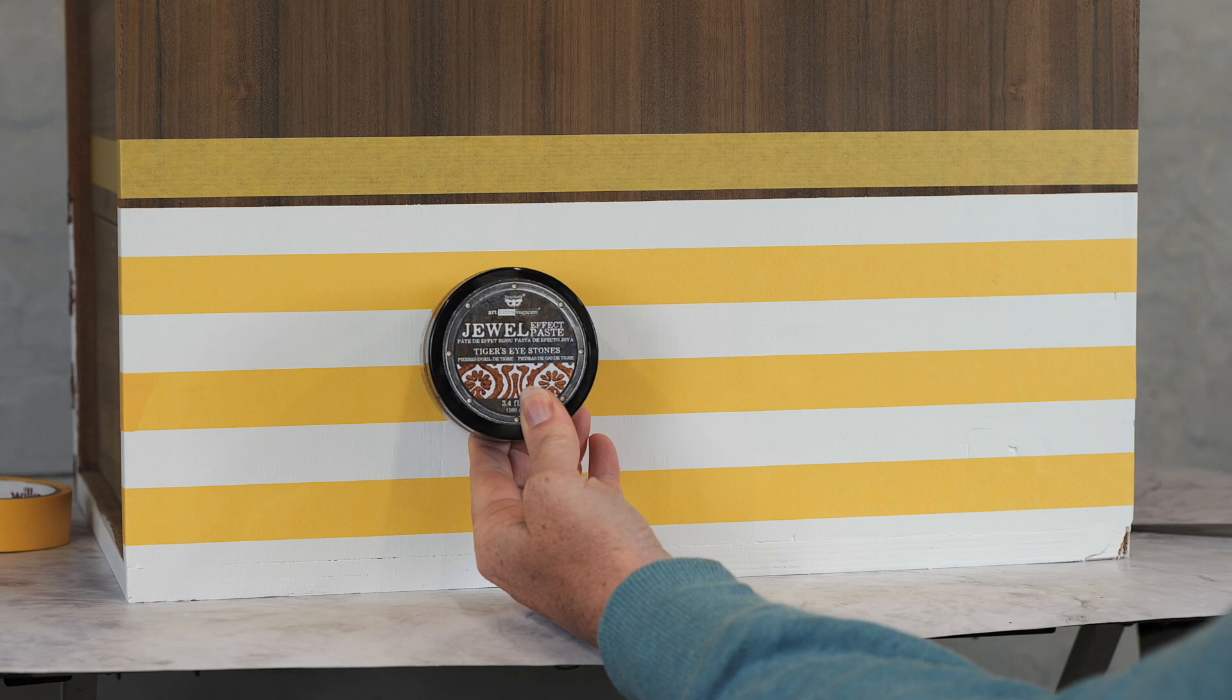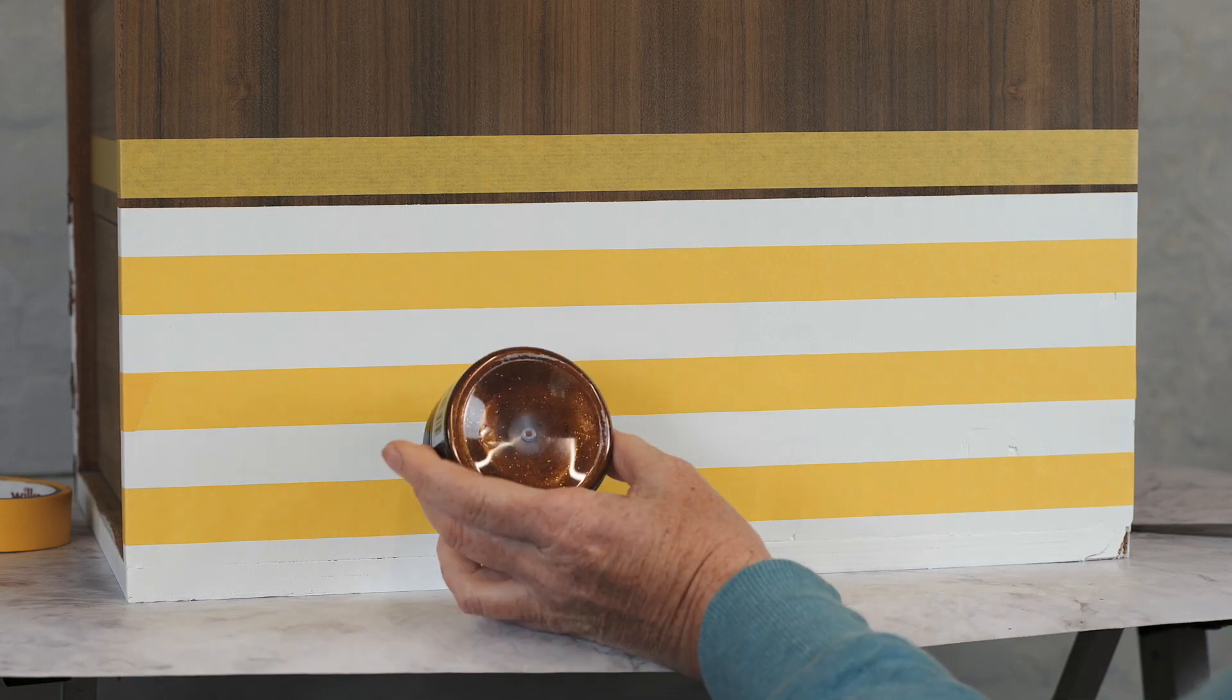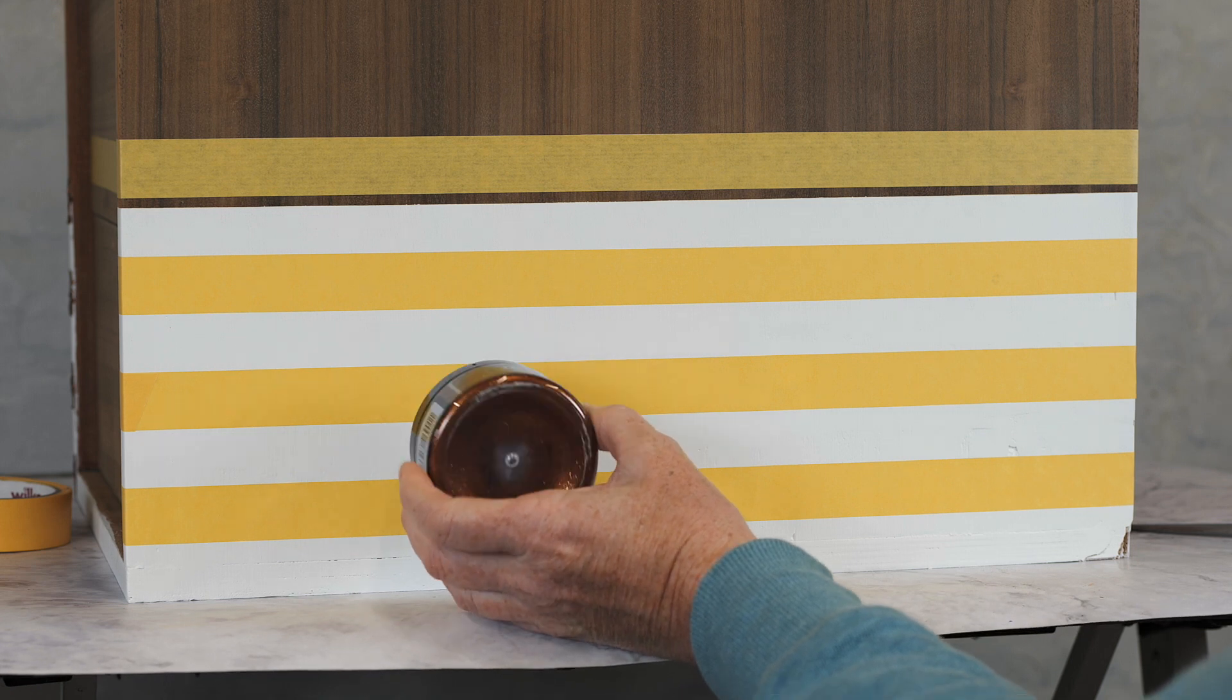So I've picked Tiger's Eye Stones, which is from the Dual Effect Paste range. Beautiful kind of bronzy color, loads of sparkle.